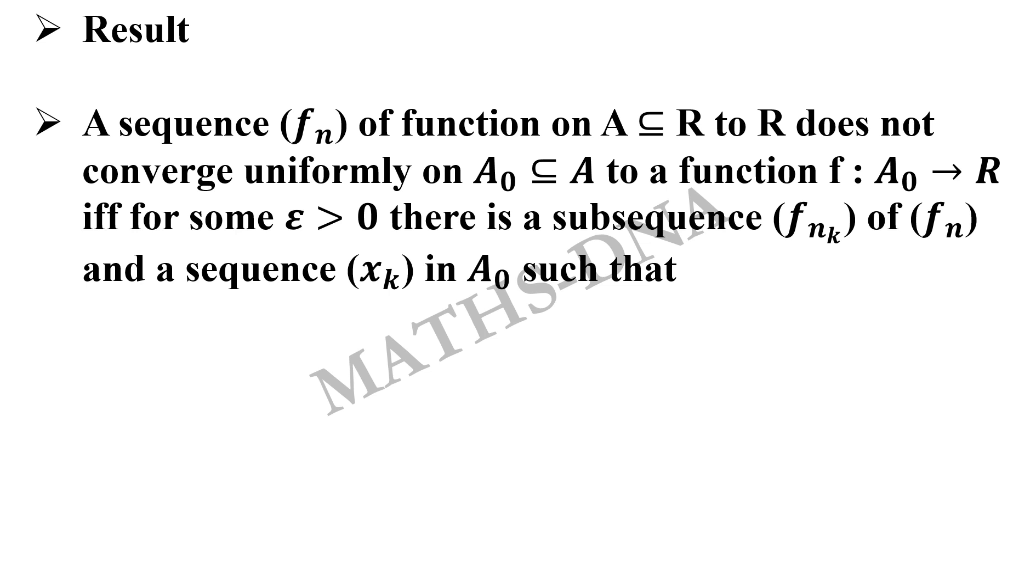there is a subsequence f_n_k of f_n and a sequence x_k in A_0 such that mod of f_n_k of x_k minus f of x_k is greater than or equal to epsilon for all k belongs to N.